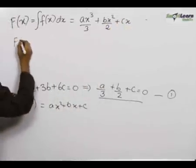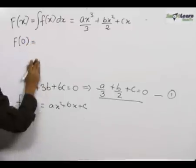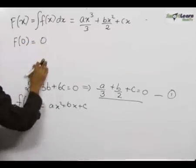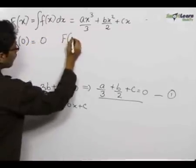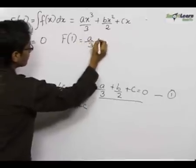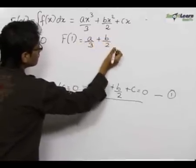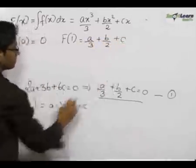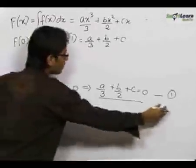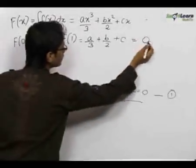Now we see F of 0 is equal to 0, and F of 1 is equal to a by 3 plus b by 2 plus c, which we know from the first equation is equal to 0.